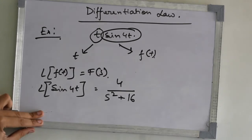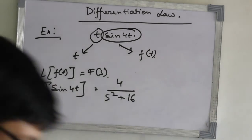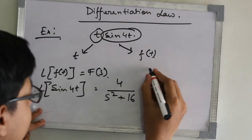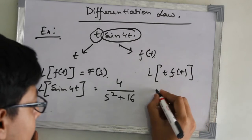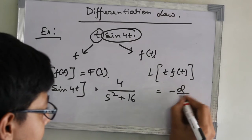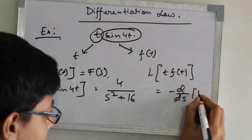Now, as we know that L of t·f of t is equal to minus d/ds of F of s.